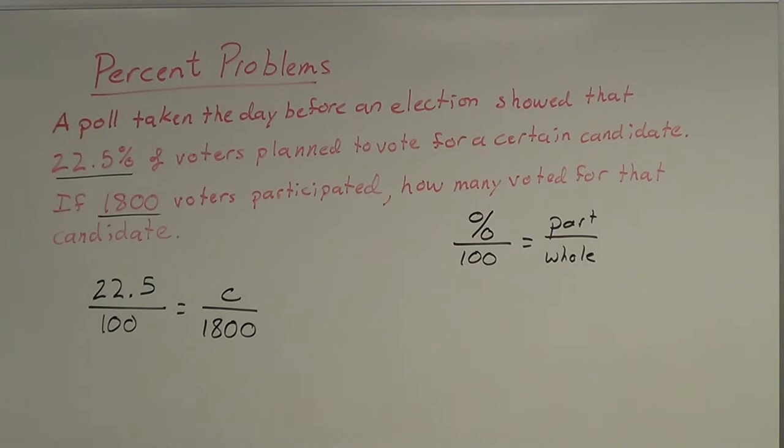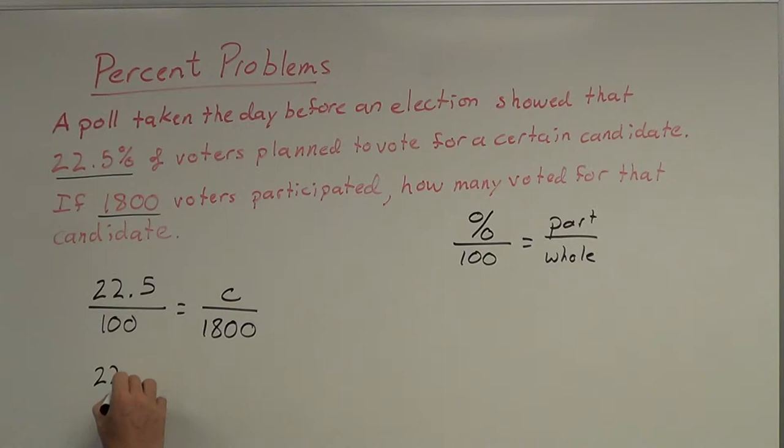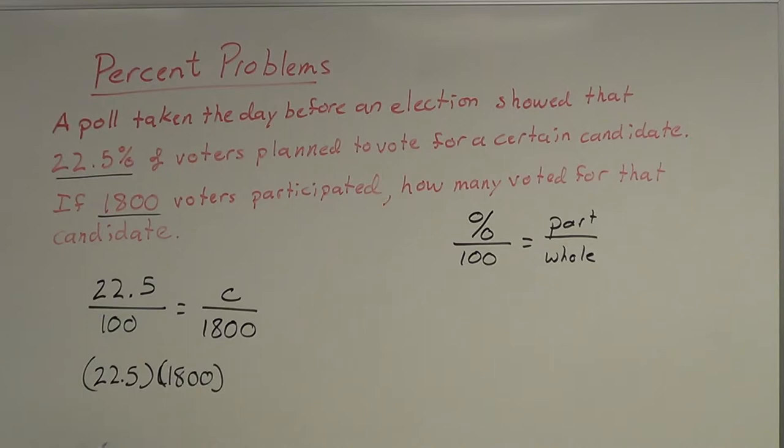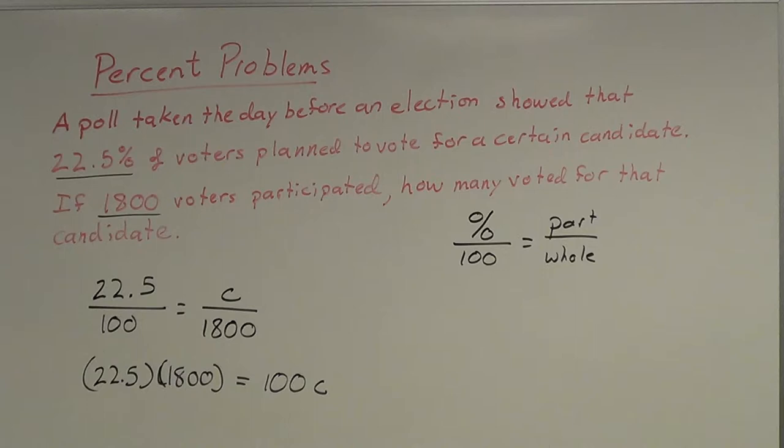Out of 1,800 voters, how many of them voted for that certain candidate? Now I have a nice neat little equation to solve — just like the proportions we did a couple of videos ago. To solve this, we use a cross product: 22.5 times 1,800 equals C times 100, which I'll write as 100C.